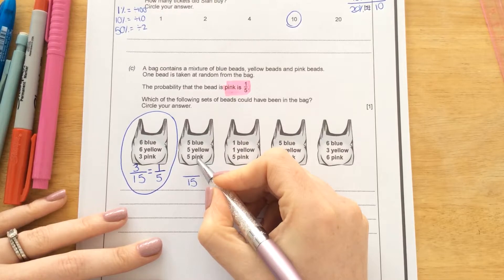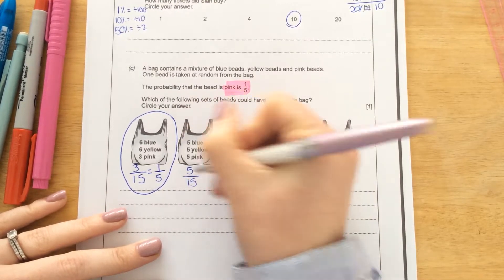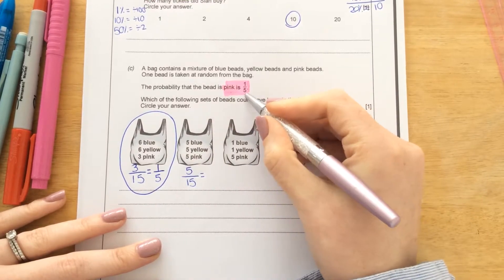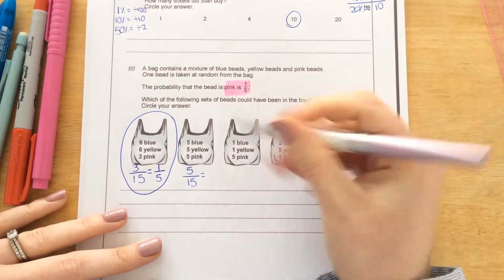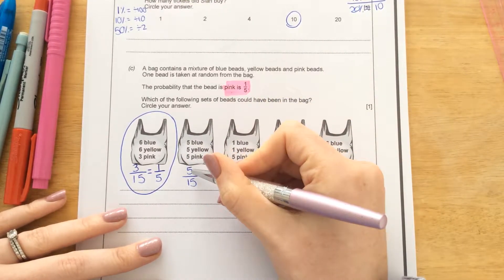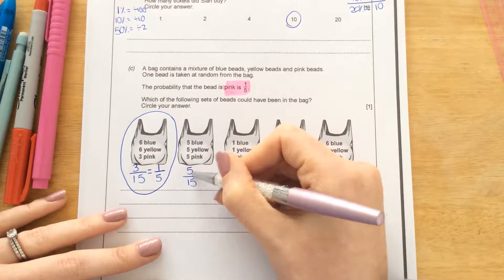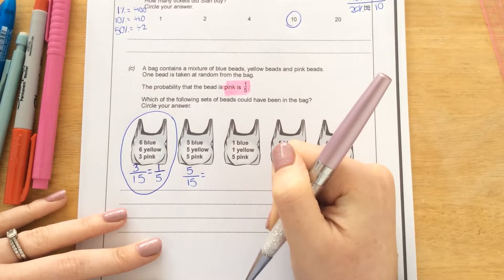And there are 5 pink beads. So that would be my top number. So now I've got to cancel this down to see if it is equivalent to the same as 1 over 5. So I need to find a number that goes into both 5 and 15.